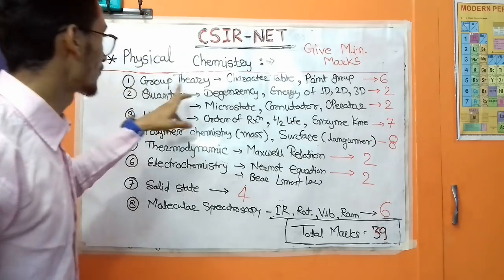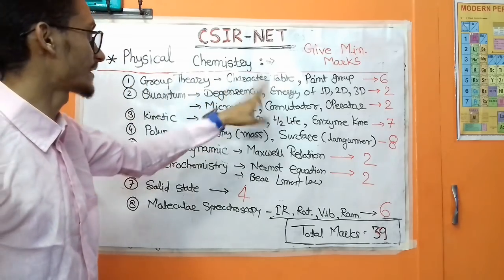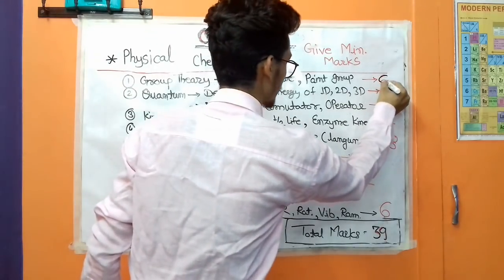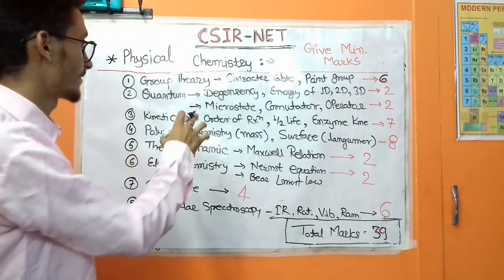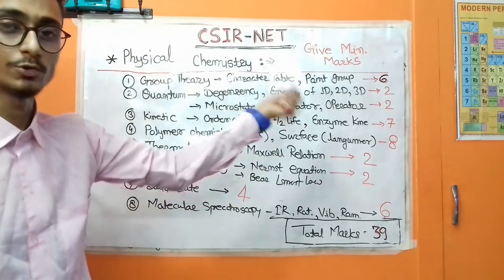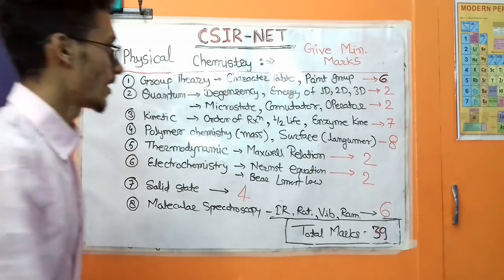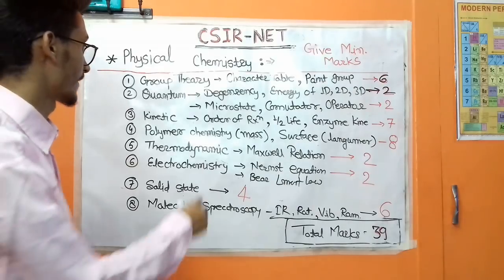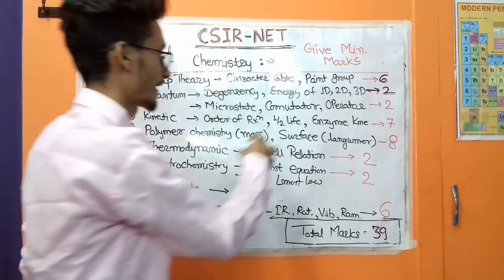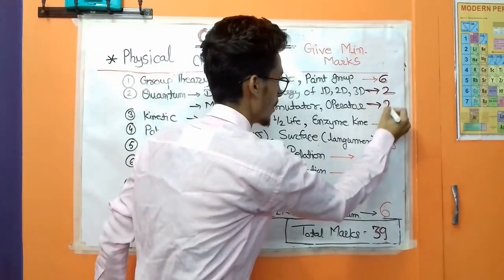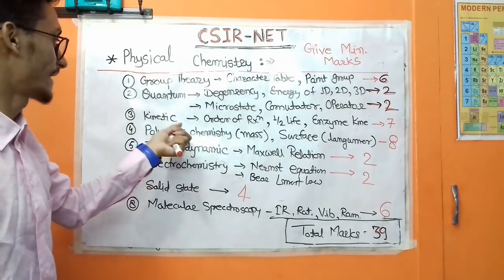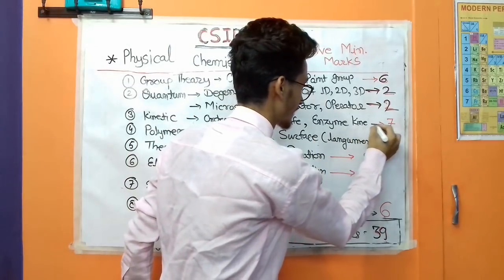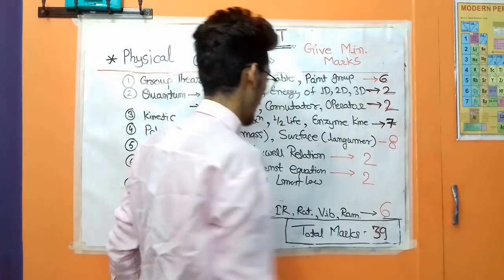In physical chemistry, the first topic is group theory — specifically character tables and point groups — which gives 6 marks. In quantum chemistry, degeneracy and energy levels of 1-dimensional, 2-dimensional, and 3-dimensional systems give 2 marks. Microstates, commutators, and operators also give 2 marks. In kinetics: order of reactions, half-life, and enzyme kinetics give 7 marks.